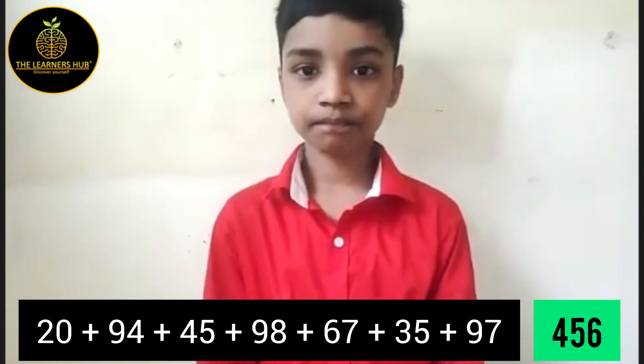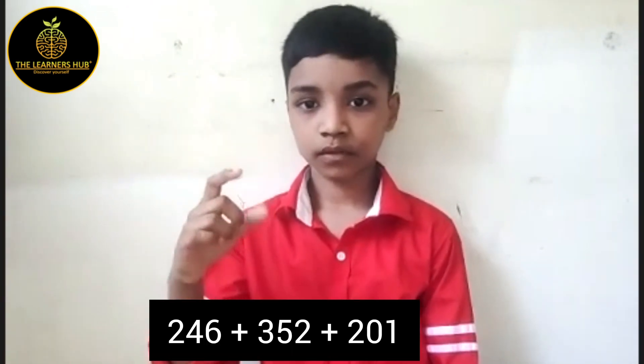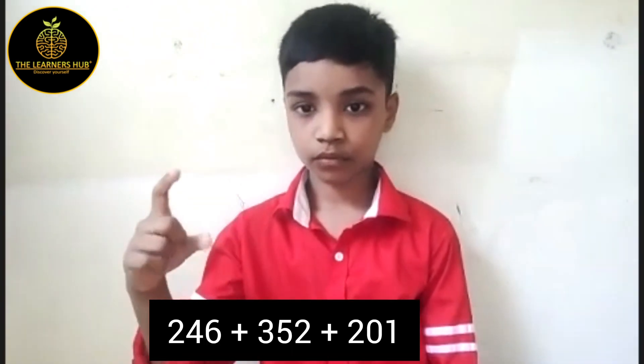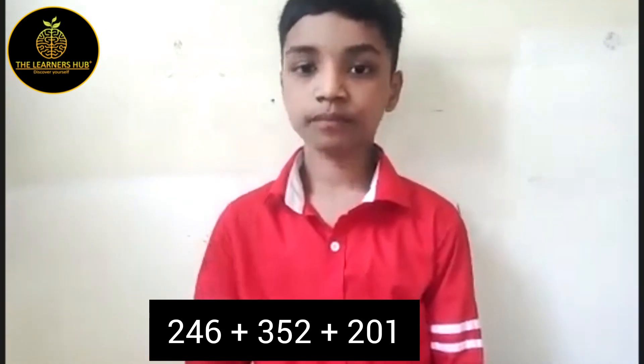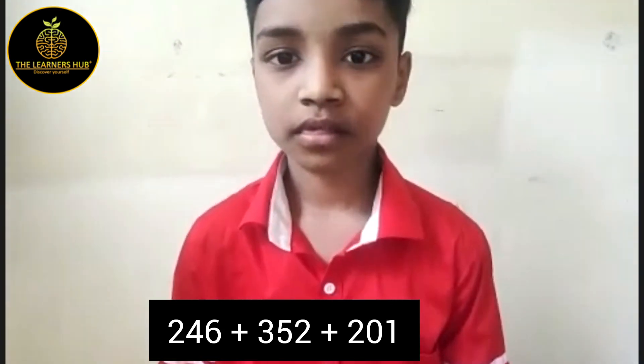Very good. Next question. 3 digit addition: 246, 352, 201. Answer is 799.